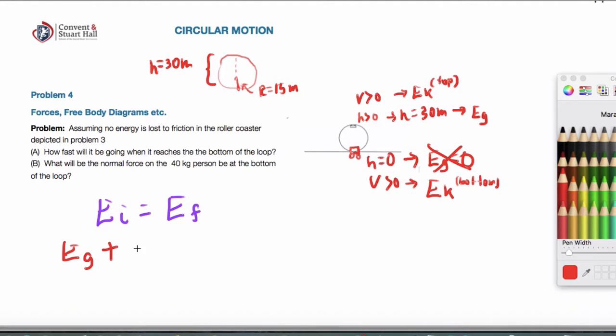All right, so Eg plus Ek equals Ek at the bottom. Let me label this. So this is the top, and this is the bottom.